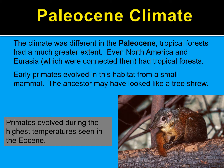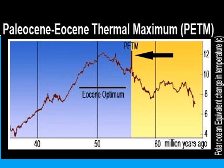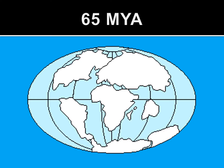The Paleocene climate was very warm toward the beginning and became very cold toward the end. Tropical forests had a much greater extent — even North America and Eurasia, which were connected then, had tropical forests. Early primates evolved in this habitat from a small mammal, and their ancestor may have looked very similar to a tree shrew. Primates evolved during the highest temperatures seen during the Eocene period — the Paleocene-Eocene Thermal Maximum.